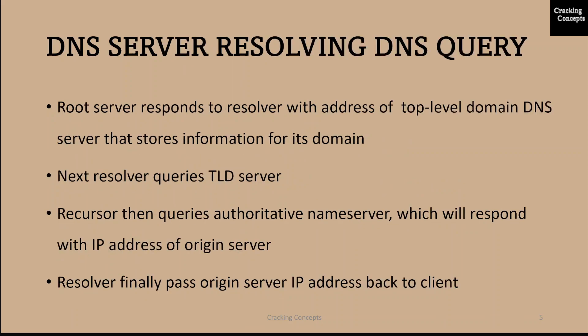Now let us see how a DNS server resolves a DNS query. In a typical DNS query without any caching, there are four servers that work together to deliver an IP address to the client: recursive resolvers, root name servers, TLD name servers and authoritative name servers. The DNS recursor, also known as the DNS resolver, is a server that receives the query from the DNS client and then interacts with other DNS servers to hunt down the correct IP.